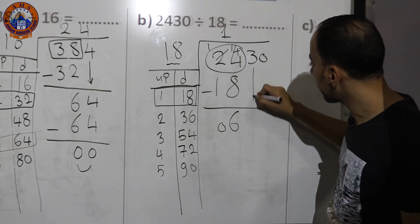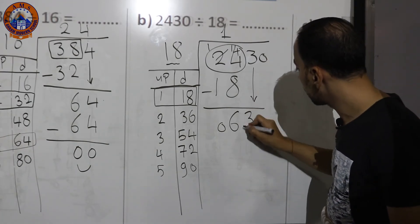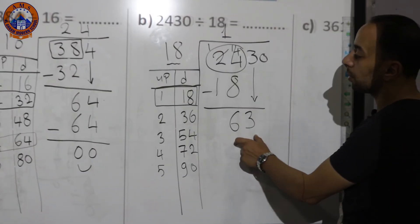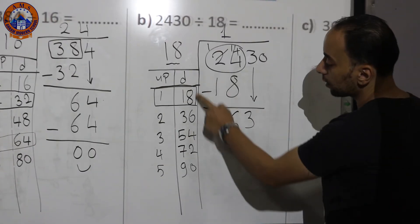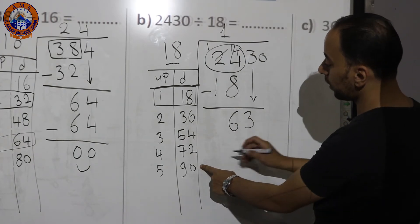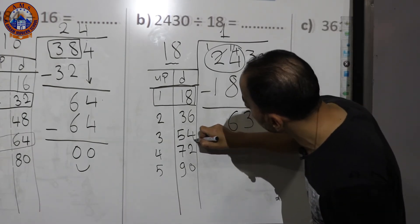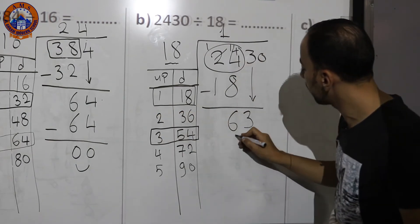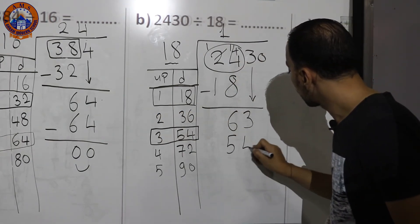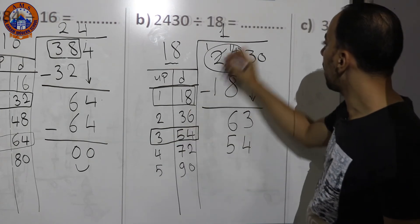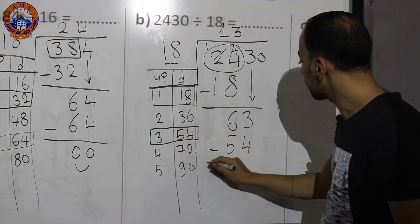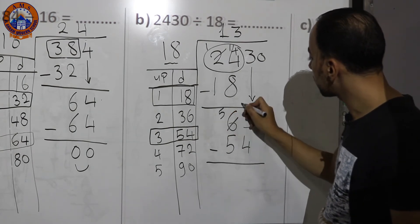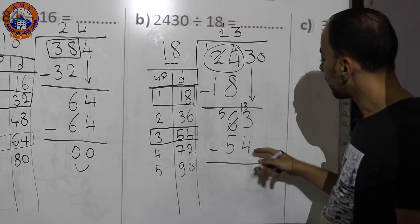Bring down the next digit 3, giving 63. Search for 63 or the nearest smaller number — 63 isn't in the table, but 54 is. Put 54 down and 3 up. Subtract: 3−4 can't be, so borrow — 13−4=9, then 5−5=0.